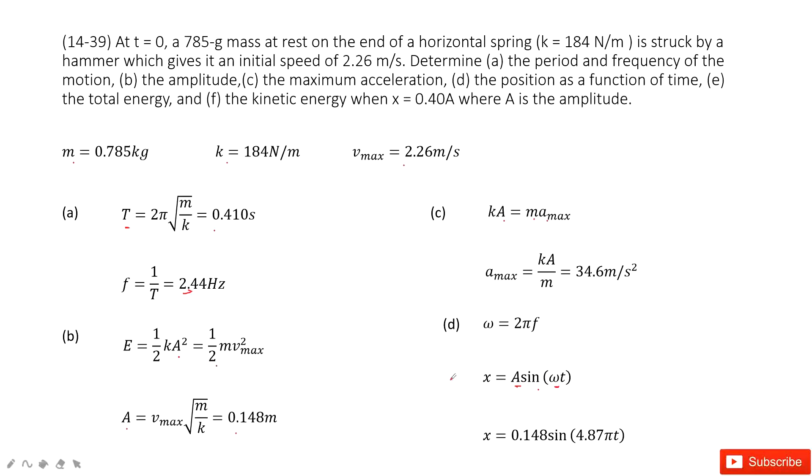So A is given, A is 0.148m. Next one, we need to find the angular velocity omega. Angular velocity omega equals 2 pi f. So input f inside. We get the final function that looks like this one.